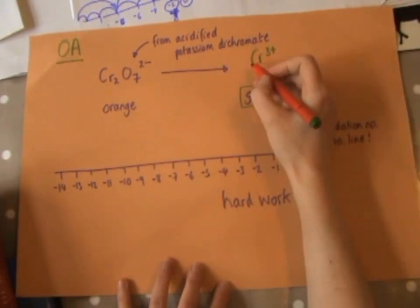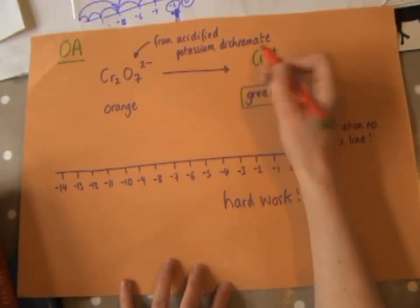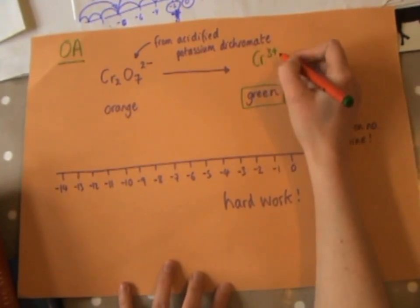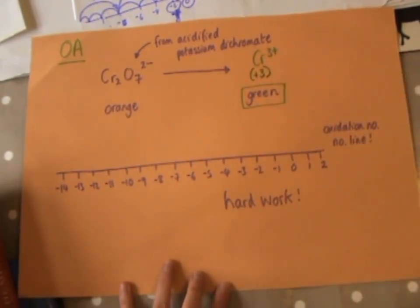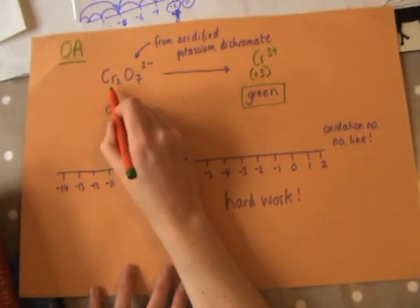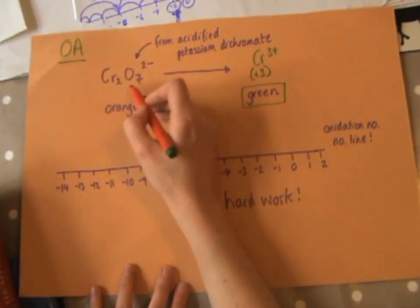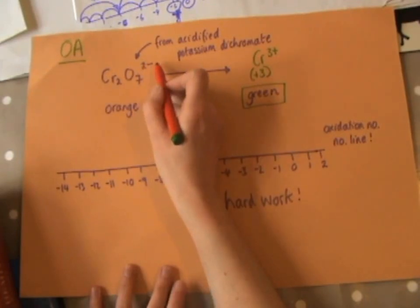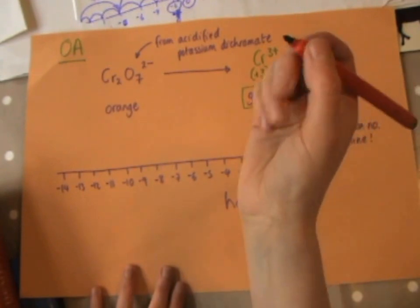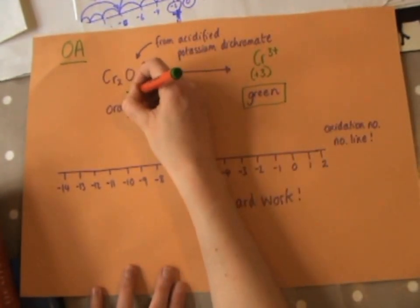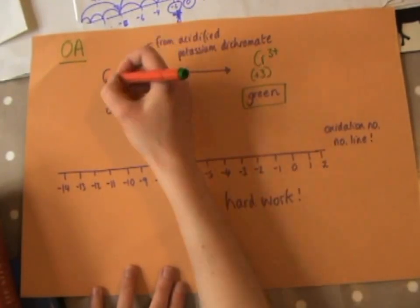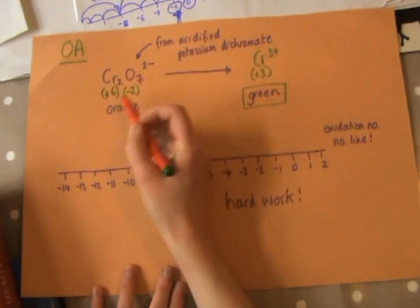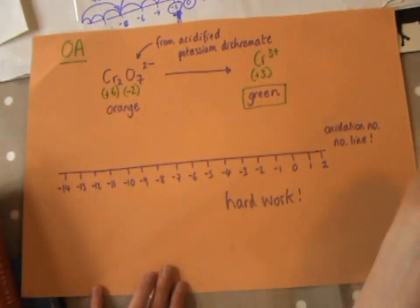This is a simple ion with just one chromium atom, so you take the charge of that ion and that tells you the element's oxidation number. Over here, the dichromate ion is a complex ion — this group of two chromiums and seven oxygens together has an overall charge of minus two. Oxygen is nearly always minus two; we put that in and use it along with the overall charge to work out that chromium is plus six.